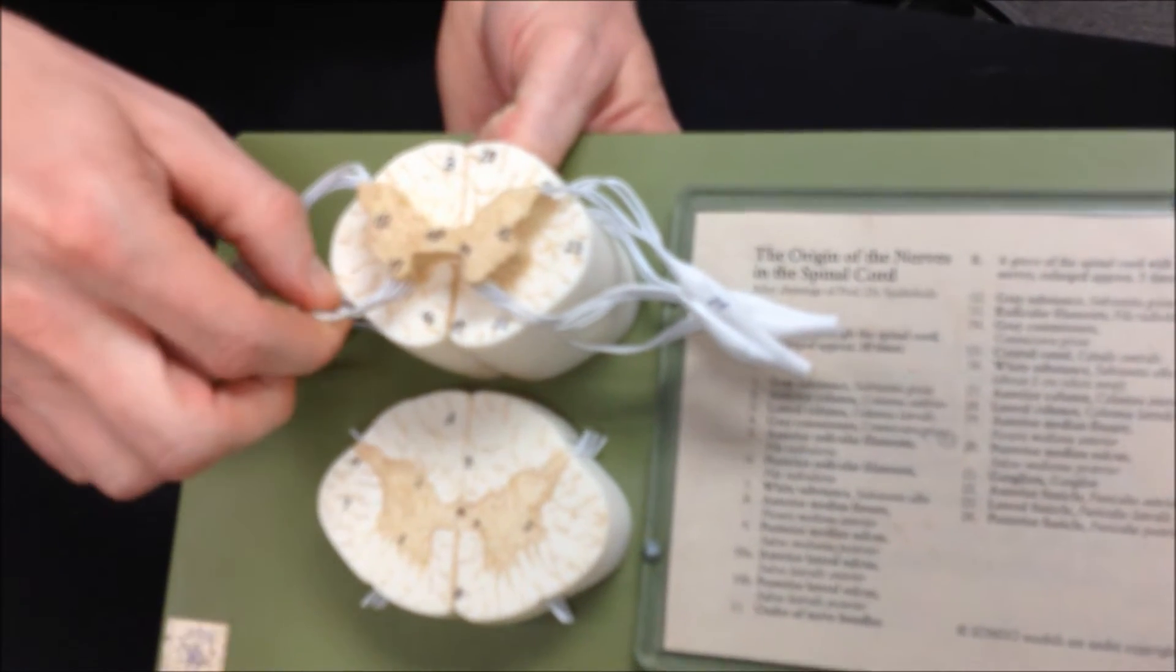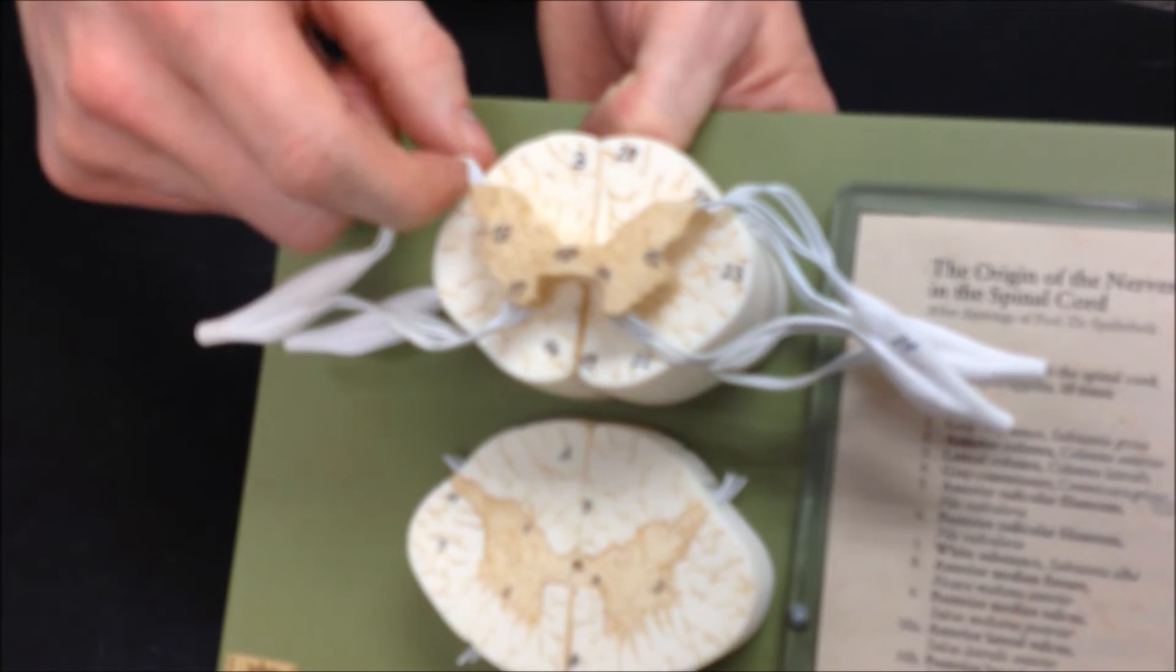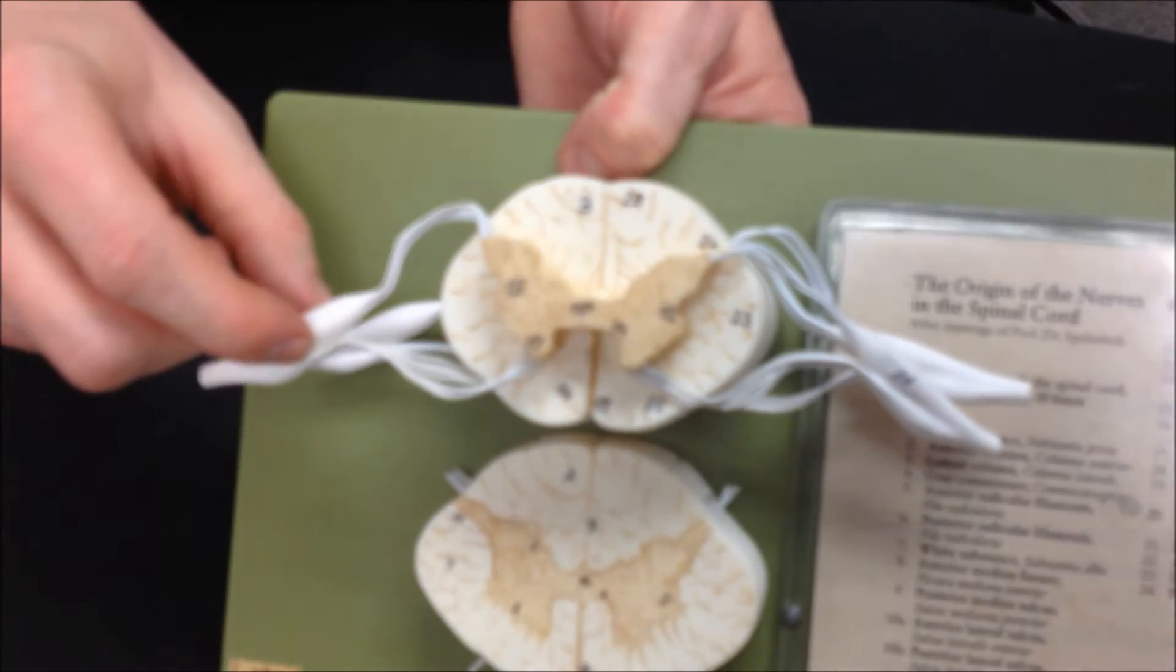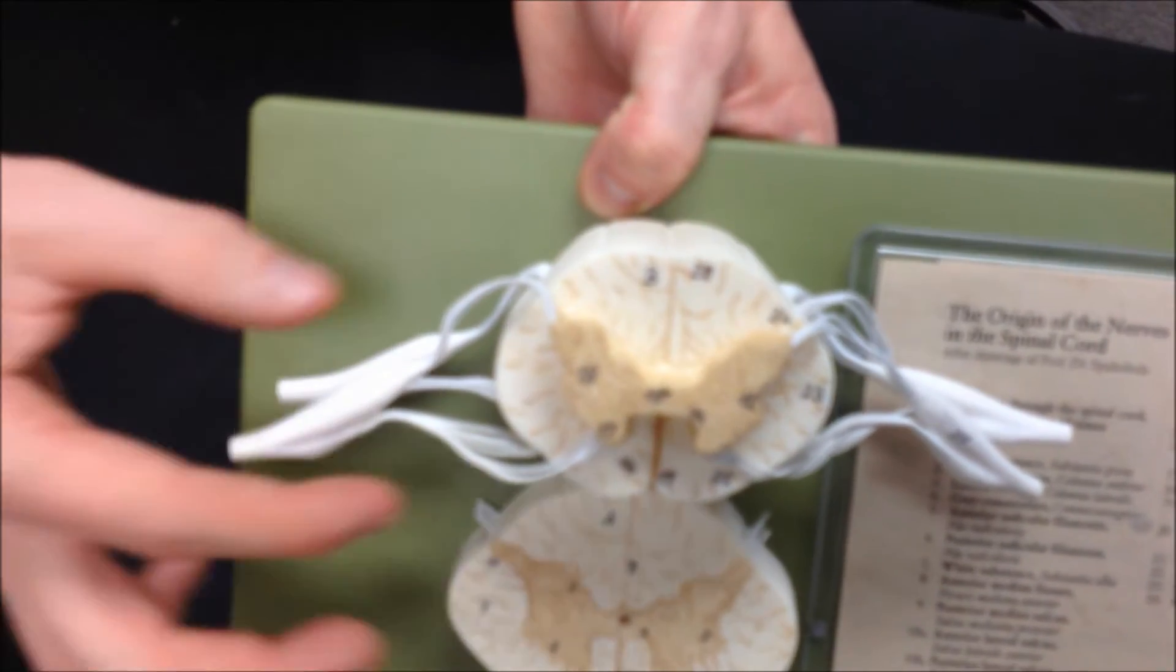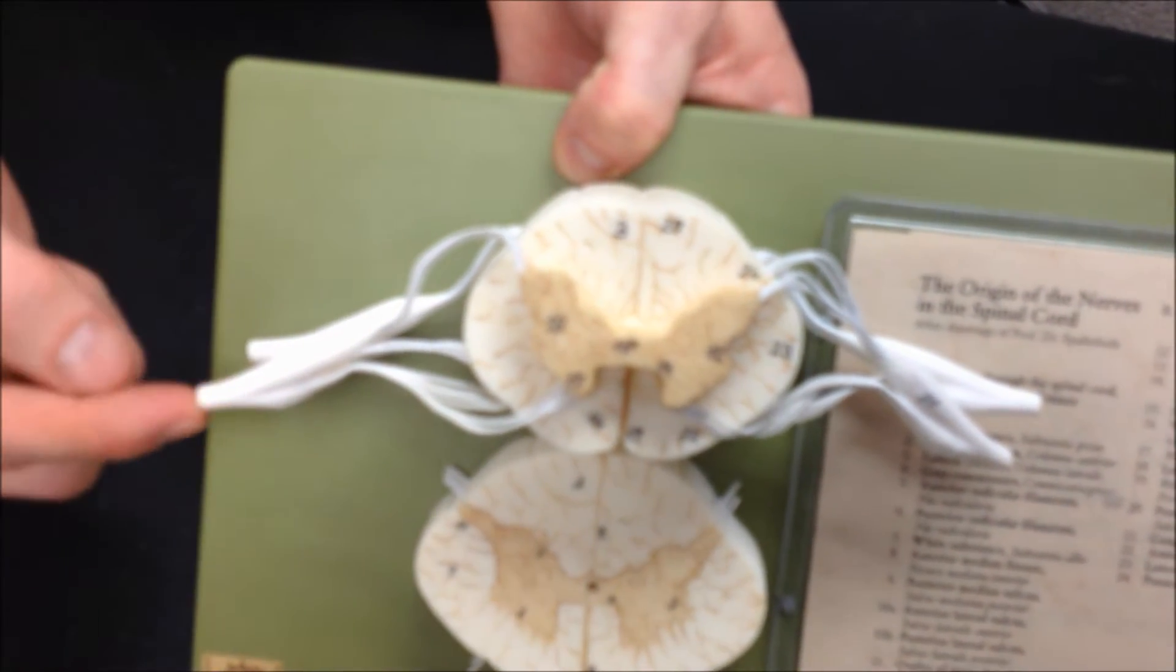So up here we're going to have ventral roots and dorsal roots in the back. And dorsal roots, their cell bodies come down here to make up the dorsal root ganglion, a big bump. And all these roots will come together to make a spinal nerve.